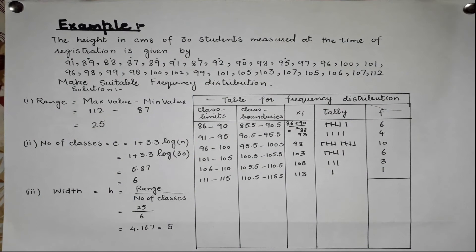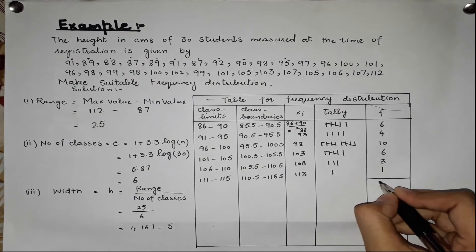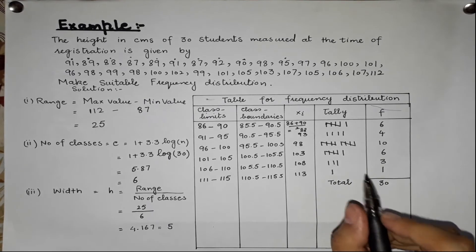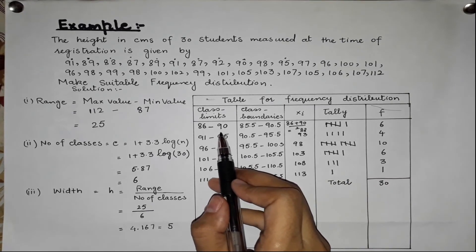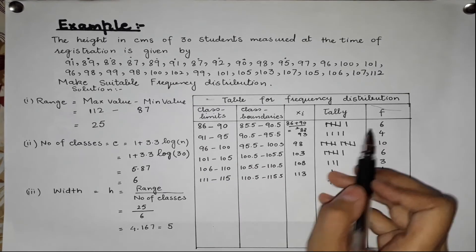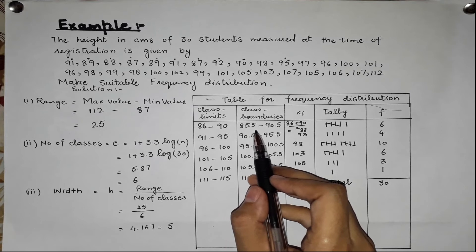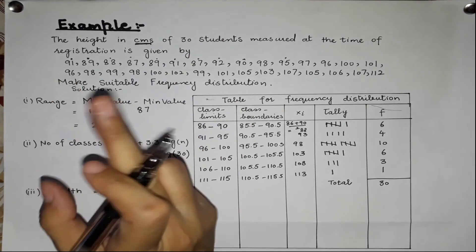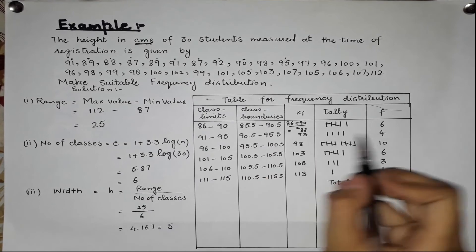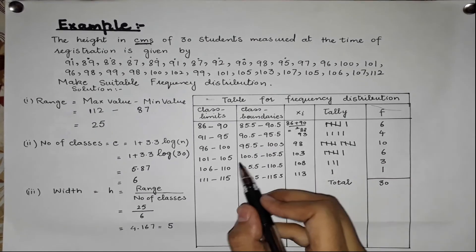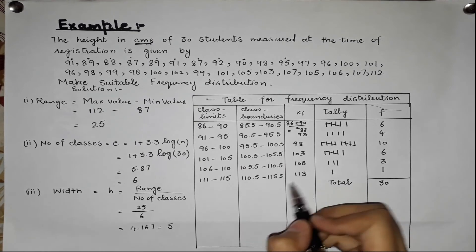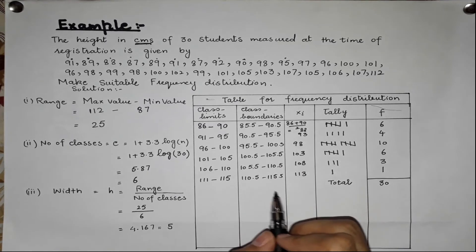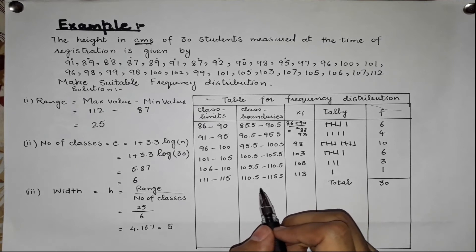The total of all frequencies is 30, which matches our 30 students. From the frequency table, we can read that 6 students had heights in the class boundary 85.5 to 90.5, and so on. I hope you understand this.